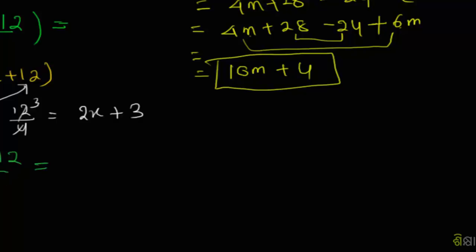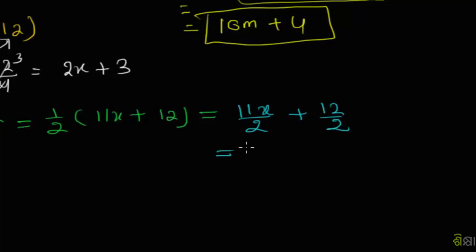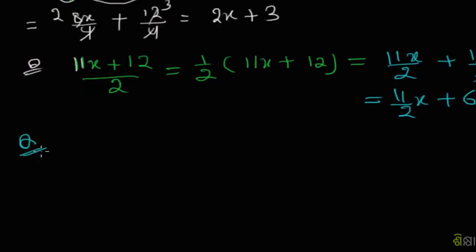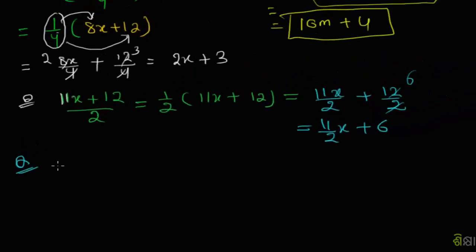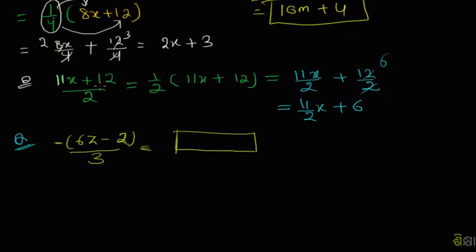Problem 4: Expand 1/2(11x + 12). The answer is 1/2 times 11x plus 1/2 times 12, which equals 11x/2 + 6, or 11/2 x + 6.